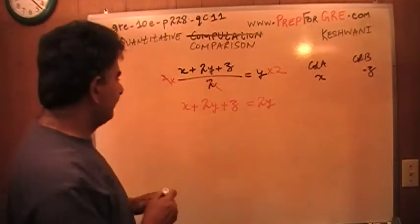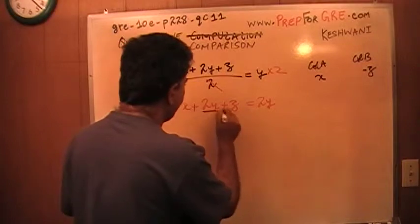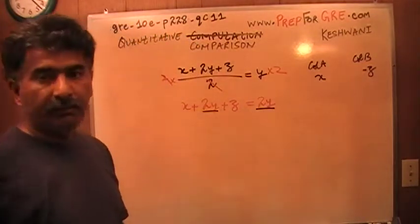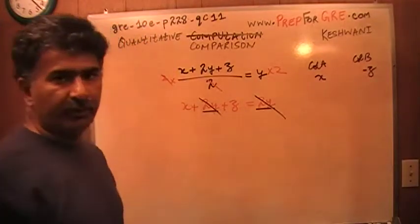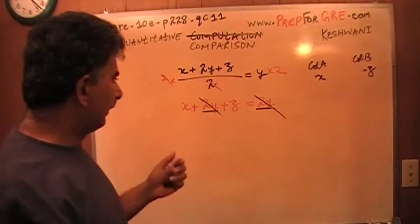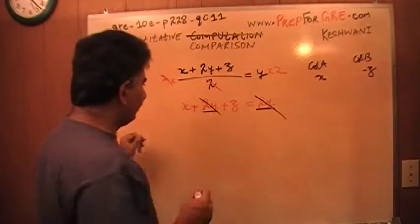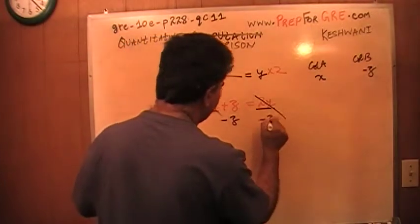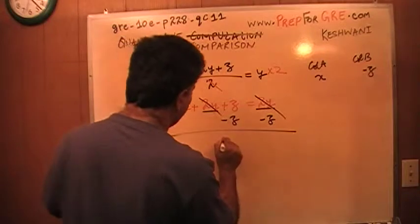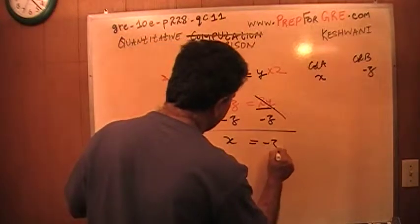Since 2y appears on both sides of the equation, if we subtract 2y from both sides, it drops out. Subtract z from both sides, and we end up with x equals negative z.